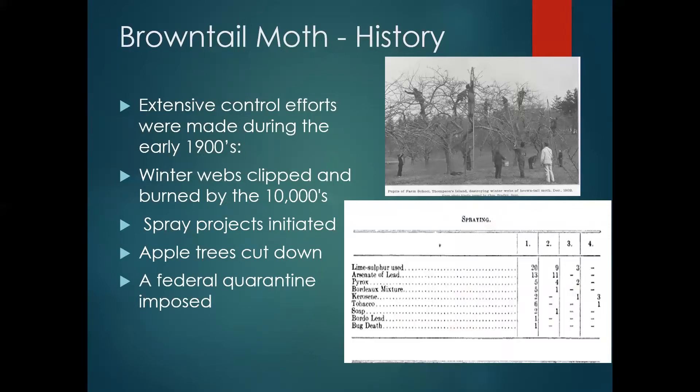Browntail has been in Maine since 1904 — well over a hundred years. It's not really a new problem; this just happens to be the latest and greatest outbreak. Extensive control efforts were made in the early 1900s — winter webs were clipped and burned by the tens of thousands, and large spray projects were initiated.